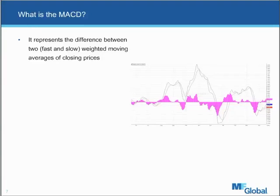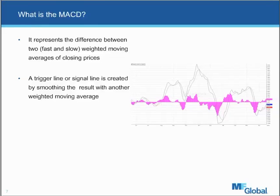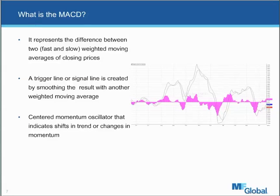What exactly is moving average convergence divergence? It represents the difference between two weighted moving averages — a fast moving average and a slow moving average — of closing prices. You'll see the two moving averages represented by two different lines. They are similar to a normal moving average that you would see on a chart. The power comes in how you use the two differences. There is also a histogram, which is effectively a trigger line or signal line created by smoothing the result with another weighted moving average. In general, it is one of the major centered oscillators, indicating shifts in trend changes or momentum. Momentum is effectively what you're trying to analyze as you do swing trading.